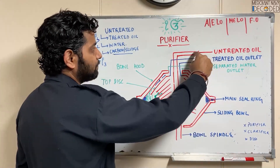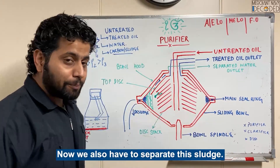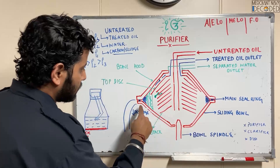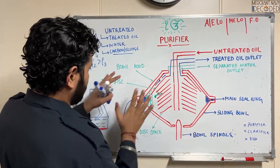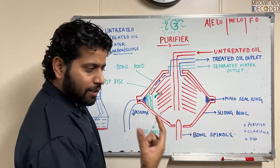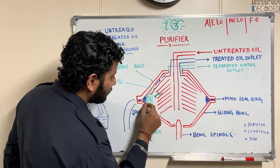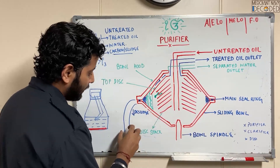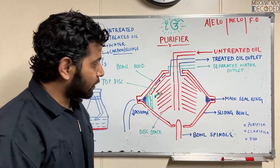So the untreated oil is being separated into the treated oil outlet, the separated water outlet, and sludge is accumulated in the outer region. The sludge needs to be removed separately. What we do is — while the purifier is running at very high RPM — this is a sliding bowl. The bowl hood is fixed, but the sliding bowl can move up and down. We open it and the purifier is de-sludged while running — the sludge goes out into the sludge tank. After some time the bowl closes again and purification resumes.